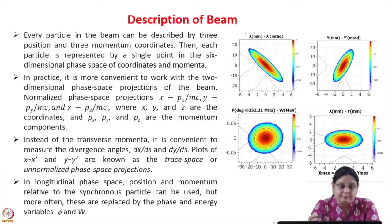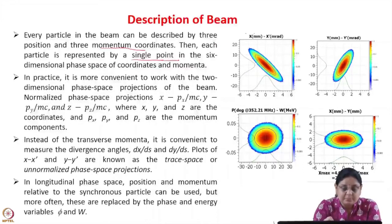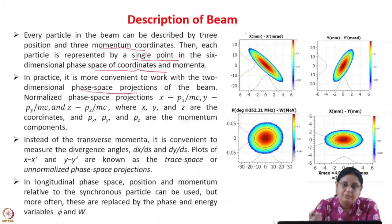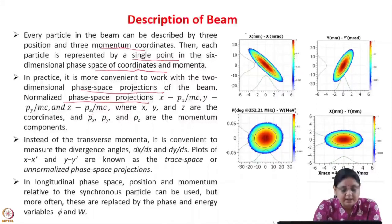Every particle in the beam can be described by 3 position and 3 momentum coordinates, and each particle is represented by a single point in the 6-dimensional phase space. In practice it is convenient to work with 2-dimensional phase space projections. The normalized phase space projections are x and p_x/mc, y and p_y/mc, z and p_z/mc, where x, y, z are the coordinates and p_x, p_y, p_z are the momentum components.